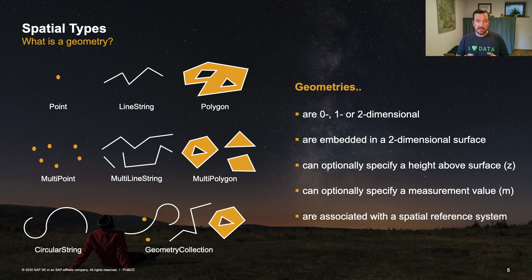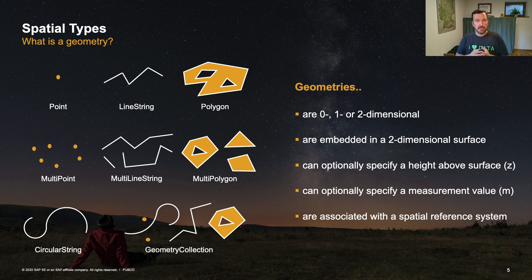At the database level, if you have one column of type ST_Geometry, you can store either one point per record or a whole geometry collection — meaning a set of points, line strings, and polygons stored in one column in one record. Geometries are generally 0, 1, or 2-dimensional, and each geometry is associated with a proper spatial reference system, which I introduced before when talking about spatial data in general.